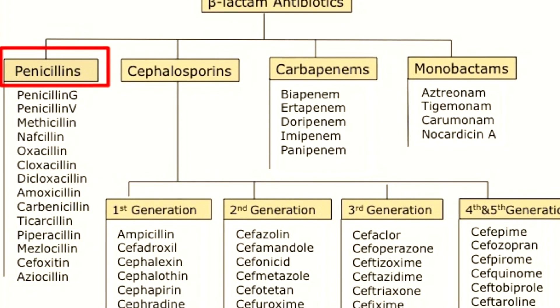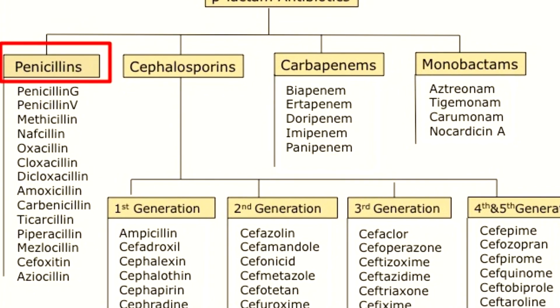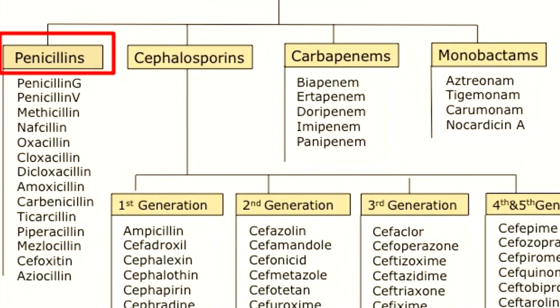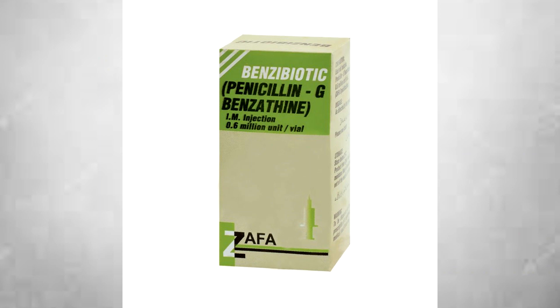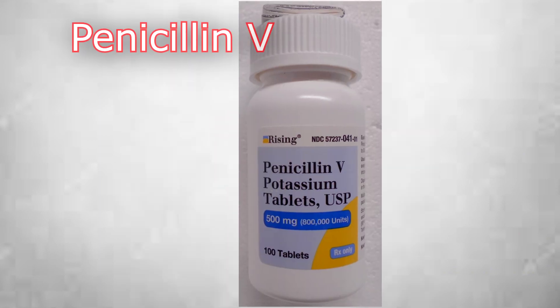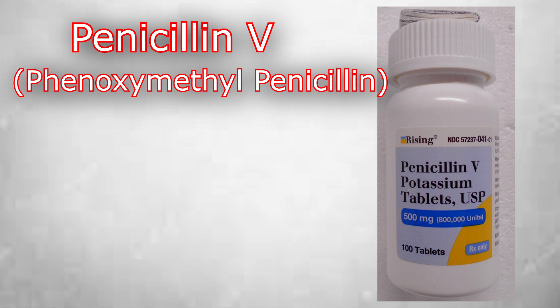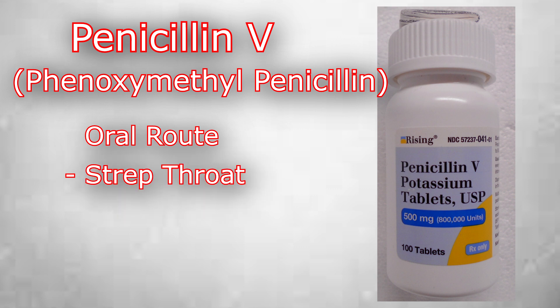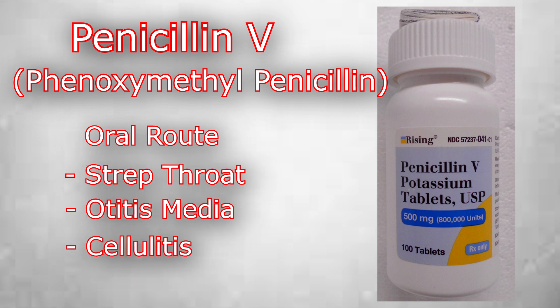Penicillins are a group of beta-lactam antibiotics. Two types of penicillins are in clinical use: penicillin G and penicillin V. Penicillin V is also called phenoxymethyl penicillin. It is given by oral route and used for a number of bacterial infections including strep throat, otitis media, and cellulitis. It is contraindicated in people who have shown allergic reaction to any penicillin before.